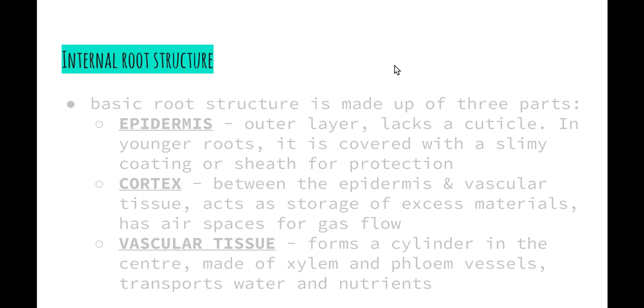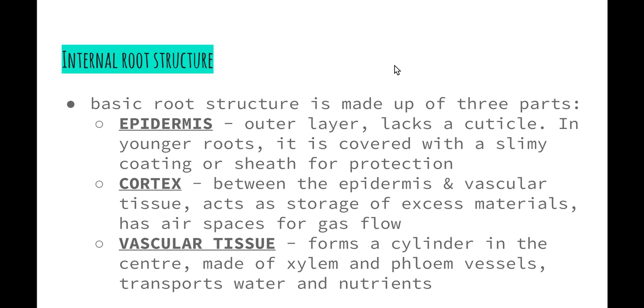If we have a look at the internal root structure now, we can see why the roots are needed to carry out the absorption of water and nutrients. Basic root structure is made up of three parts. The epidermis is the outer layer, which lacks a cuticle. The cuticle is the very outer surface, in particular of leaves, which is waxy and provides protection. In younger roots, it is covered with a slimy coat or sheath for protection instead of a cuticle, so it's not waxy and therefore doesn't stop water from moving in or out.